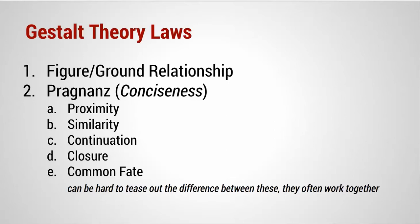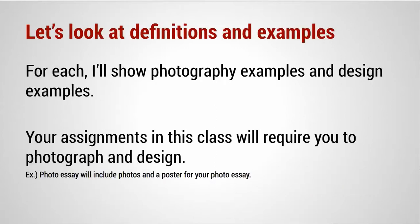The first law is figure-ground relationship and the second is prägnanz. Prägnanz means conciseness — this is the tendency of your visual perception to try to make things more simple, to take a mess of objects and simplify it. Within prägnanz, we have five laws, and it can be hard to tease out the differences between them because they work together so often. You don't have a photograph that only has proximity — your photograph will probably use all or most of these laws. Let's look at some definitions and examples, including photography and design examples.